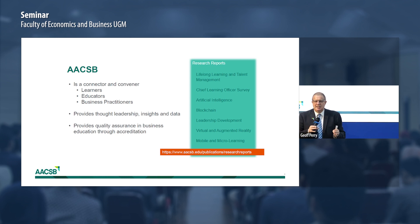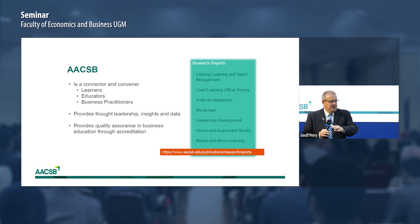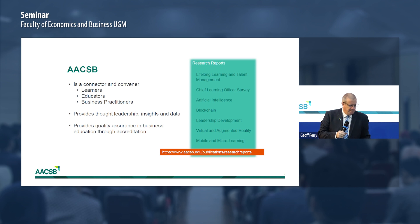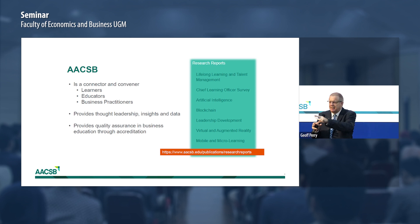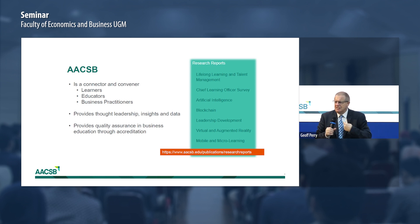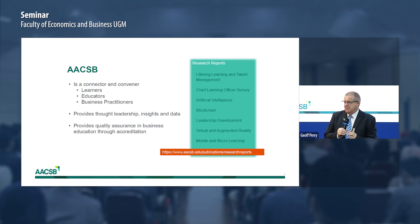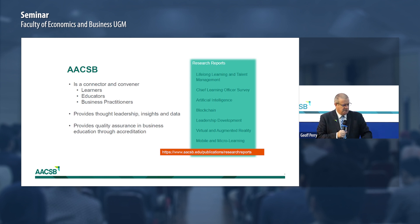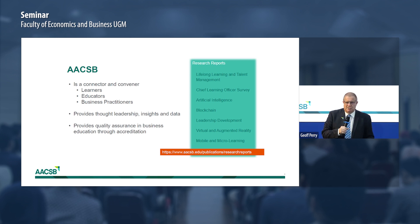AACSB is a connector and convener. We bring together business schools — here today with FEB UGM is an example, we've brought together business schools from Indonesia. We bring together educators, learners, business, government, not-for-profits, and broader communities. We provide thought leadership — and interestingly, it's not actually AACSB the organisation, it's AACSB the community that provides thought leadership, because it comes from our members. And we do accreditation, which is the last part around quality assurance for business schools.